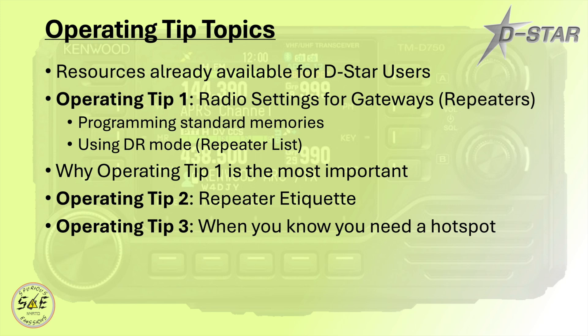Our operating tip topics today are going to be resources that are already available for DSTAR users. We're going to talk about operating tip 1, which is radio settings for gateways or repeaters, whether you're programming your standard memories or whether you're using DR mode and the repeater list, and why operating tip number 1 is the most important. Operating tip 2 will be repeater etiquette, and operating tip 3, when you know you need a hotspot.